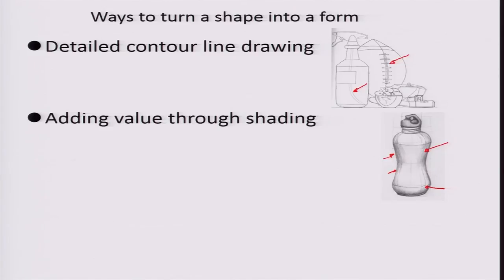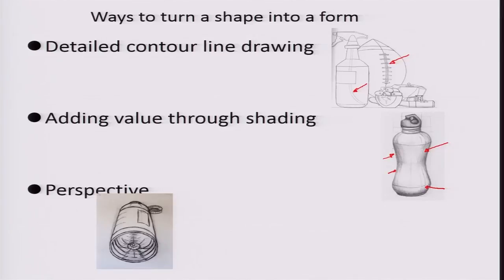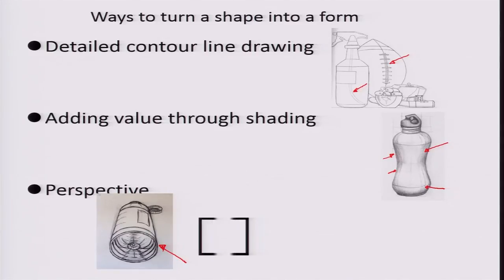Just because of the practice of shading, the object has changed domains into representing a 3D object. There could also be a perspective, as represented here, which gives an idea of a form coming into existence. Now, given these basic definitions, let us look at how we manipulate them in the electronic space of a CAD package.